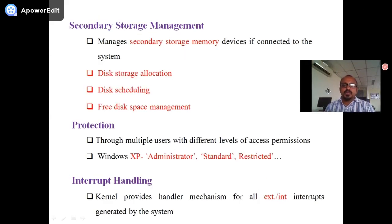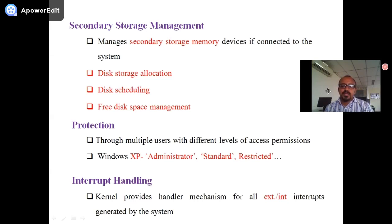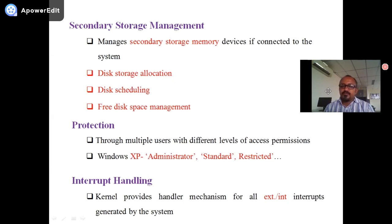Secondary storage management: primary memory is smaller in size while secondary storage is larger, and secondary storage management is also very important. It manages secondary storage memory devices connected to the system — for example, a pen drive or external hard disk. This includes disk storage allocation, disk scheduling, and free disk space management.